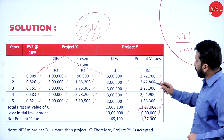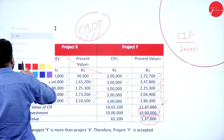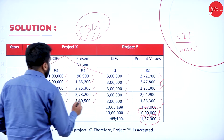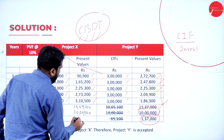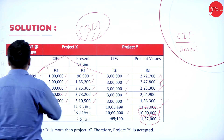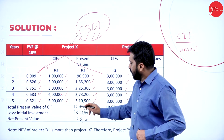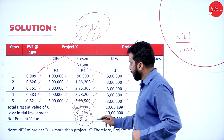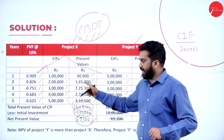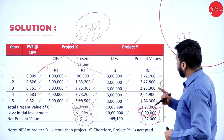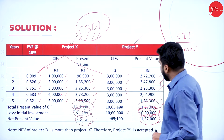Now, from this you minus 10 lakh for each. For Y: 11,37,000 minus 10 lakh. You got 1,37,000. And for X: total is 10,65,100, your investment is 10 lakh. What is the answer? 65,100. As per X, your calculation: 10,65,000 minus 10 lakh — you got 65,000 as your answer. 11,37,000 minus 10 lakh — 1,37,000 is your answer. This will be your net present value for X and net present value for Y.